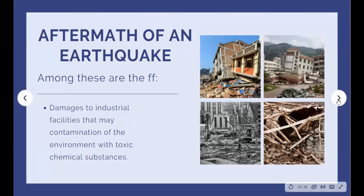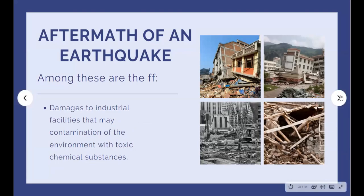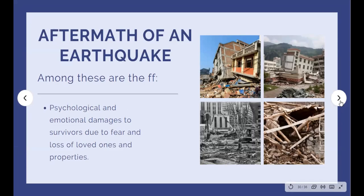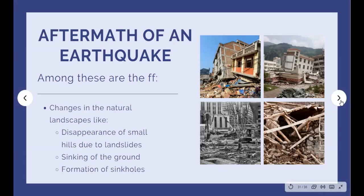Damage to industrial facilities may result in contamination of the environment with toxic chemical substances. Death may occur due to fire, chemical poisoning, and falling debris from collapsing structures. There are also psychological and emotional damages to survivors due to fear and loss of loved ones and property. Changes in natural landscapes include disappearance of small hills due to landslides. Liquefaction occurs when the soil loses its strength and stiffness due to earthquake vibration, causing the soil to behave more like a liquid than a solid.